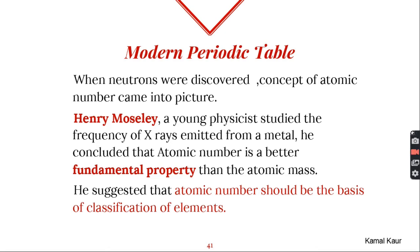Atomic mass is the mass of protons and neutrons, but atomic number is the number of protons present in the nucleus of an atom. Then Henry Moseley, while studying the frequency of X-rays, found that atomic number is a better fundamental property than atomic mass, meaning elements can be differentiated in a better manner using atomic number than atomic mass.